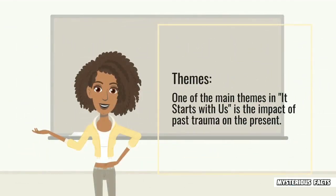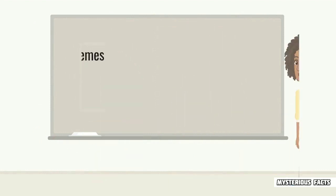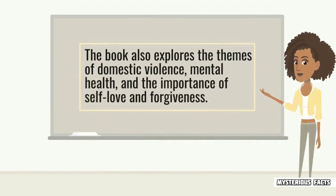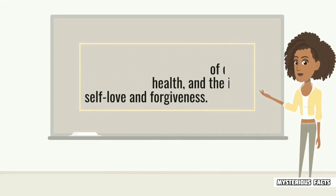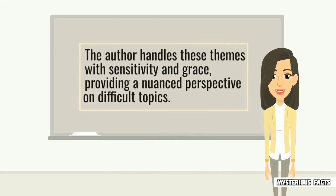Themes. One of the main themes in It Starts With Us is the impact of past trauma on the present. The book also explores the themes of domestic violence, mental health, and the importance of self-love and forgiveness. The author handles these themes with sensitivity and grace, providing a nuanced perspective on difficult topics.